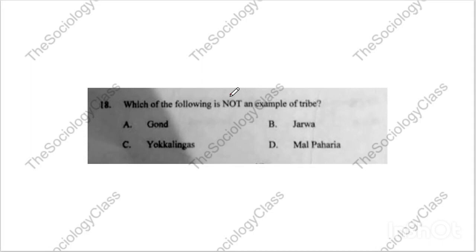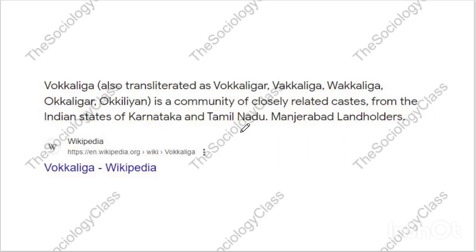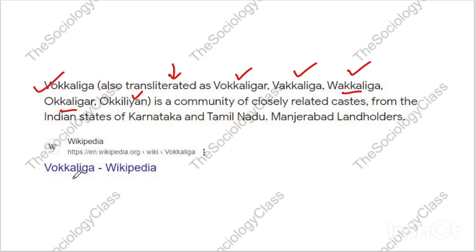Question number eighteen: 'Which of the following is NOT an example of a tribe?' The correct answer is C — Vokkaligas. Many people have trolled me in comments about the pronunciation. It can be said in many ways: Okaligas, Vokkaligas, Wakaliga, etc. In the question paper they may spell it differently too. The key point is that this is a caste, not a tribe. It belongs to Karnataka and Tamil Nadu — remember both facts.